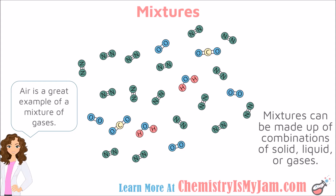Mixtures can be any combination of solids, liquids, and gases. A great example of a gas mixture is the air that you breathe — it is mostly nitrogen with oxygen, carbon dioxide, and water vapor mixed in. A mixture does not have to consist of things in the same phase; for example, soft drinks are liquid with carbon dioxide gas mixed in, making it a liquid-gas mixture.